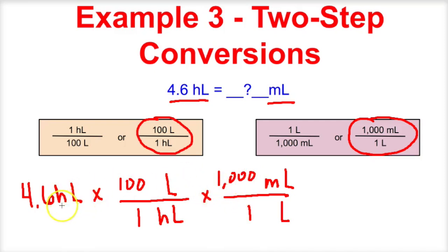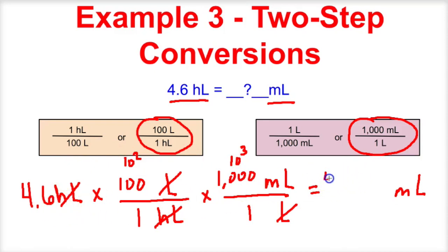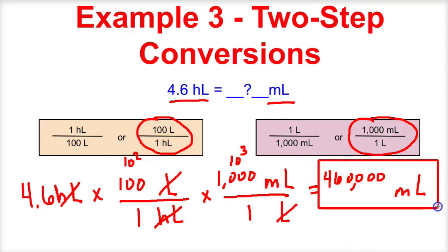Now let's take a look at what happens. We have hectoliters on top that cancel out with hectoliters on bottom, and liters on top that cancel out with liters on bottom. The only unit left over is milliliters. So we take 4.6 times 100 times 1,000. That's 10 to the 2 times 10 to the 3rd, which is 10 to the 5th. If we move this decimal 5 times to the right, we end up with 460,000 milliliters. So 4.6 hectoliters is the same thing as 460,000 milliliters.